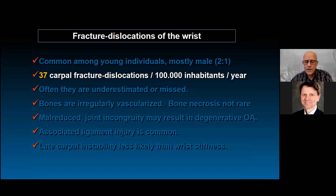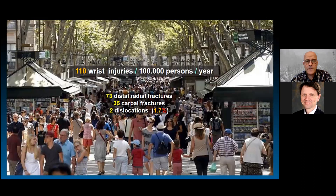For every year, you'll have 110 wrist injuries per 100,000 persons. The vast majority are distal radial fractures — 73 in this series — and 35 carpal fractures. That means only about 2 dislocations, which is only 1.7% of wrist injuries per 100,000 persons per year.